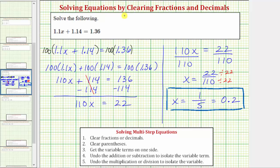Performing this substitution, we have 1.1 times 0.2 plus 1.14 equals 1.36. Let's evaluate the left side on the calculator to make sure it equals 1.36.